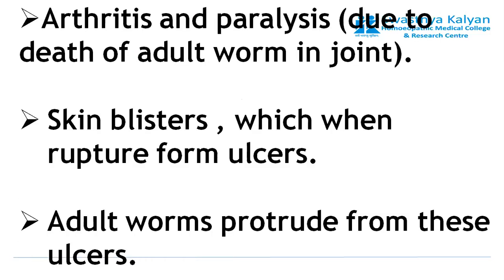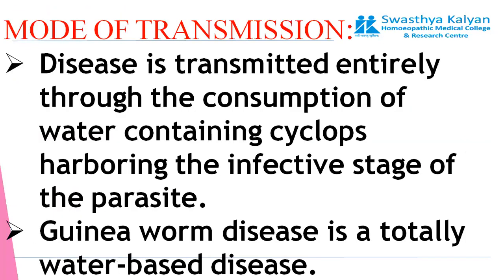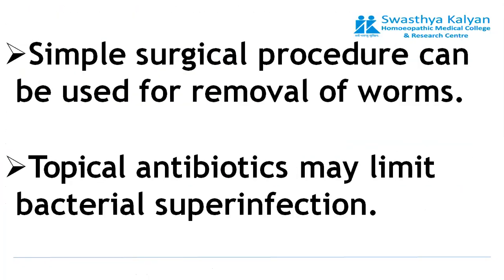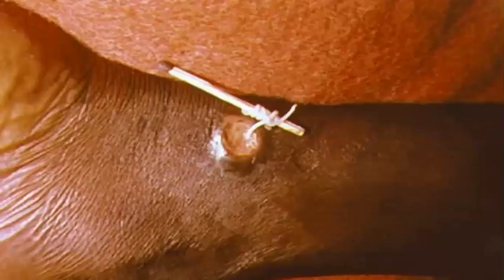It may also cause arthritis and paralysis due to death of the adult worm in a specific joint. Skin ulceration is required for releasing the larvae into the water, and the adult worm protrudes from these ulcers. We have a pictorial demonstration showing how they look — this is the blister, with the worm just peeping out of it.